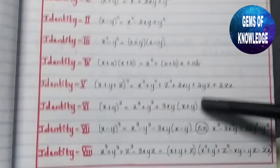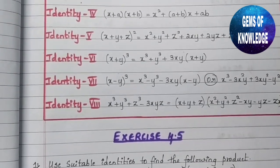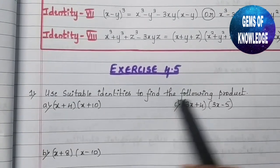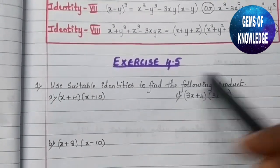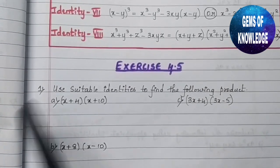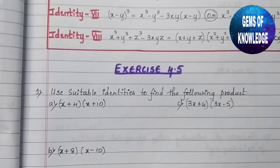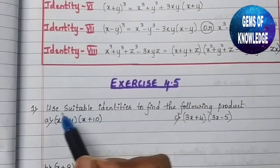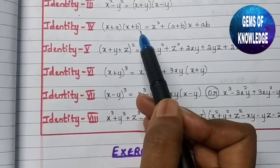You need to remember all these eight identities to solve exercise 4.5 of the polynomial chapter. The first question says: use suitable identities to find the following products. Three questions have been given and you need to find out the suitable identity and solve using it. The first question is (x + 4)(x + 10), which suits the fourth identity: (x + a)(x + b).